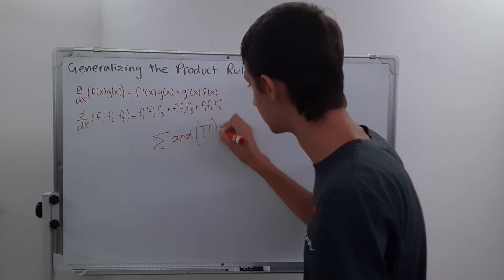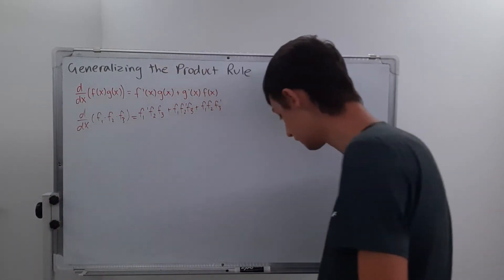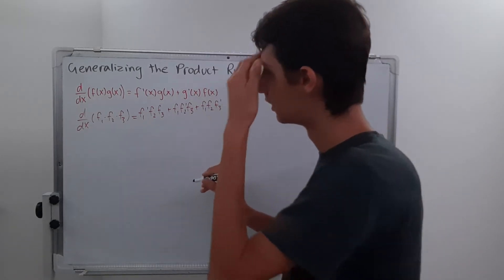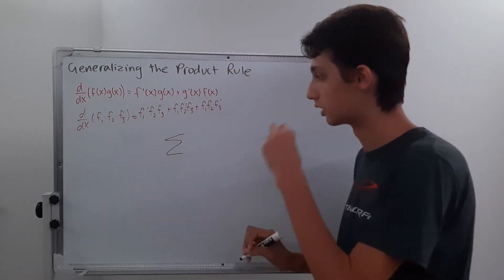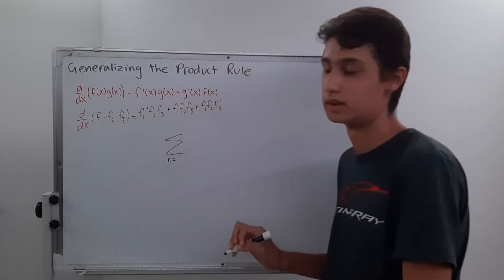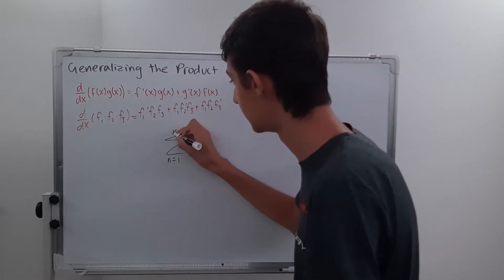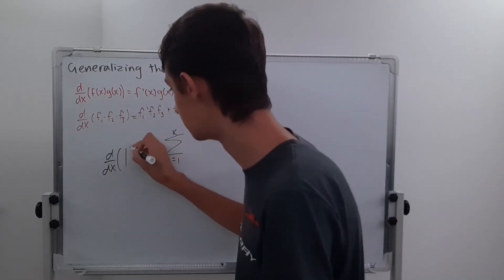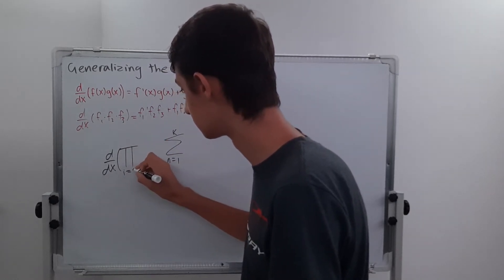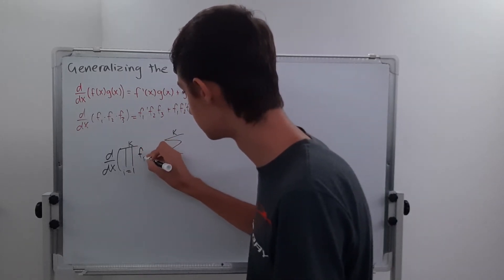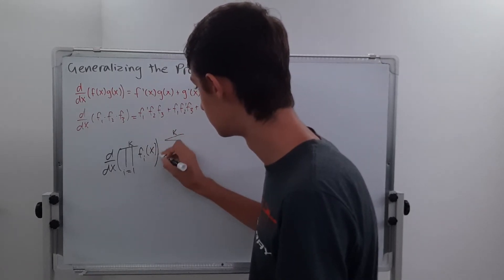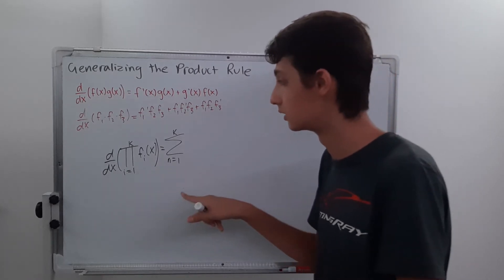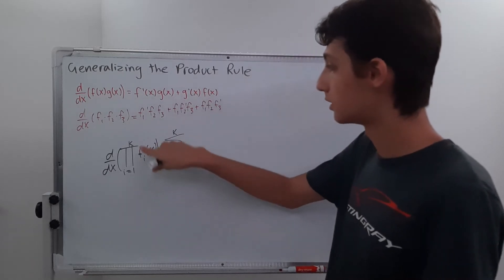So it's going to be a sum of products. Let's actually go about finding this. We're going to have a sum — we'll say n equals 1 all the way to k, since we have k terms. We'll write the derivative of a product of functions using our Pi notation, or capital Pi. We'll start at index i, i equals 1 to k, of our f_i's. So our f1 times f2 times f3, all the way up to k terms.